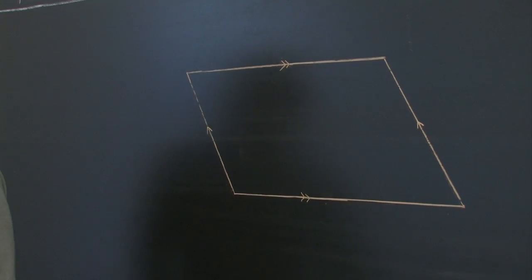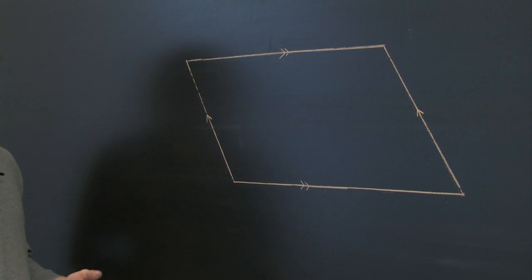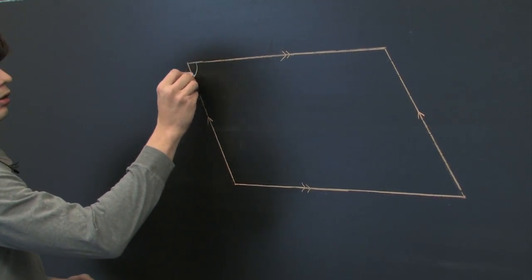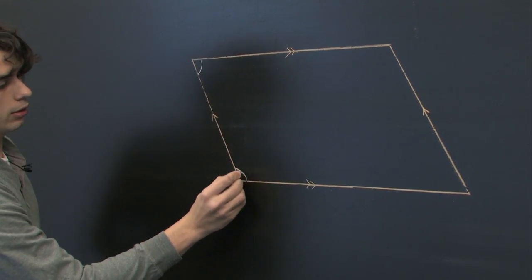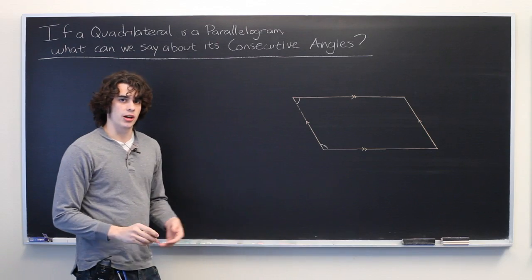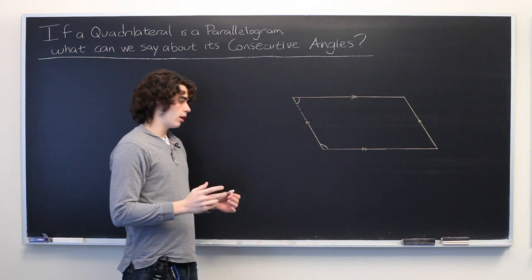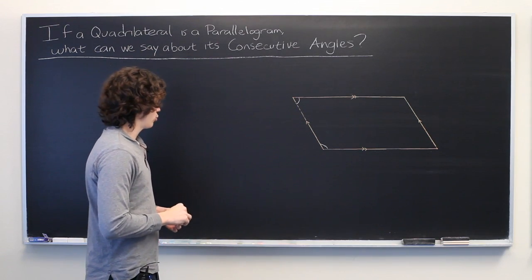So here we have a parallelogram. What we want to know is, if we take a look at this angle here, and this angle here, do they have any kind of special relationship? The answer is yes, and let's show how.